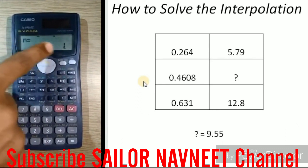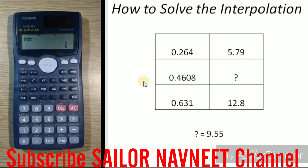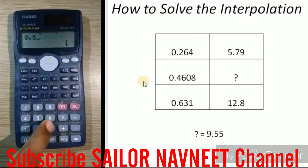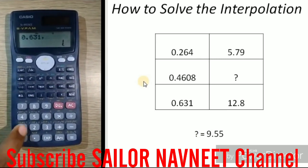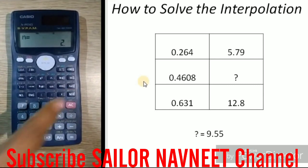Then, enter the next two values, that is 0.631, 12.8 and then press the button M+.